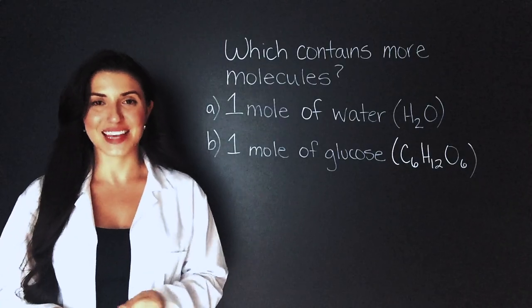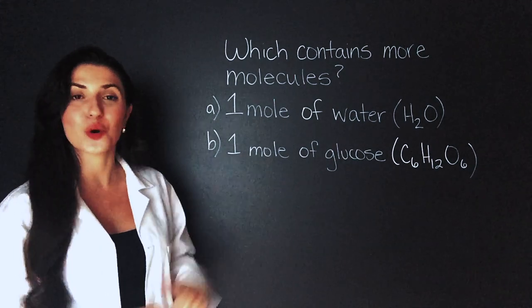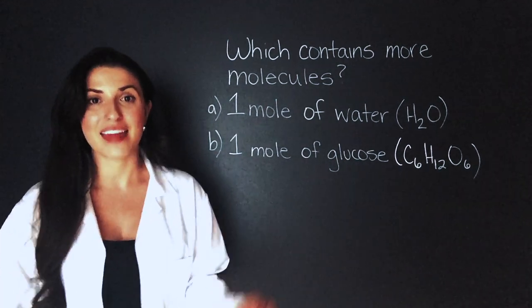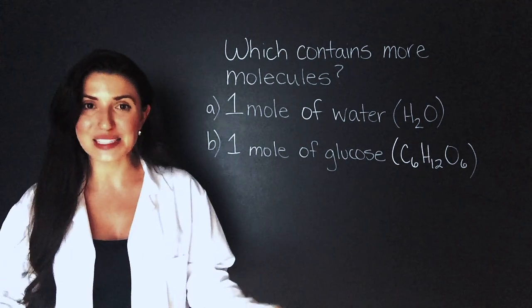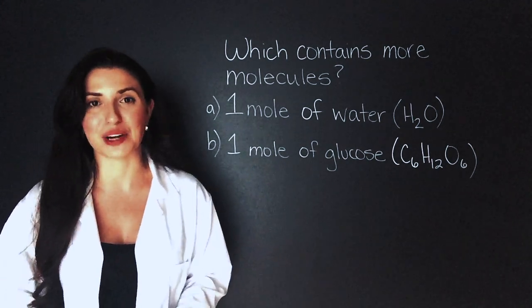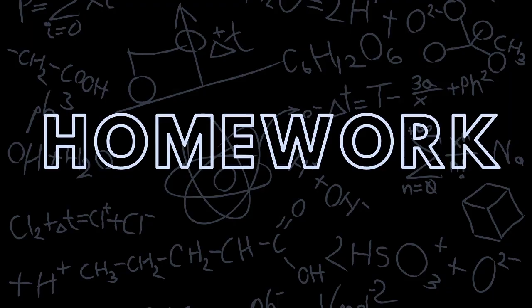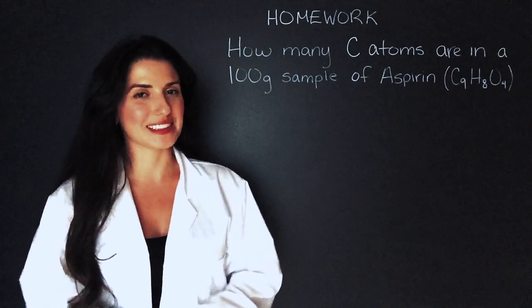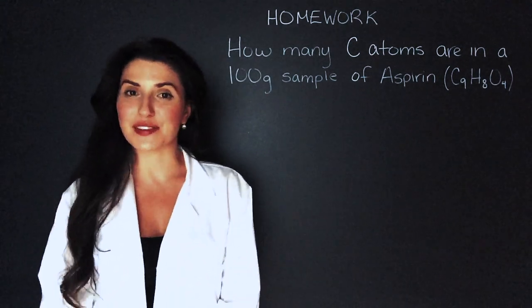You've made it to the end, and my trick question for today is: which contains more molecules — one mole of water (H₂O) or one mole of glucose? The answer is they both contain the same amount, because they both are one mole, which means they both have 6.022×10²³ molecules. For homework, how many carbon atoms are in a 100 gram sample of aspirin? Tune into my next video to see how we solve that one. If you like what you learned today, please feel free to hit the subscribe button and the notification bell so you're the first to know when a new lesson drops.